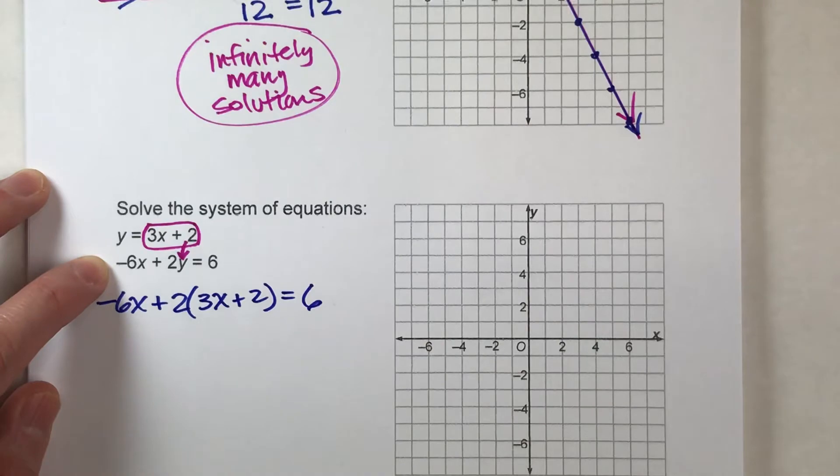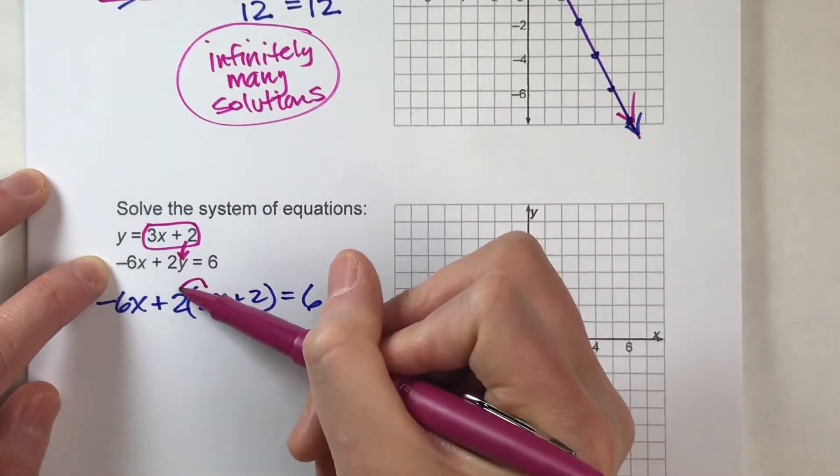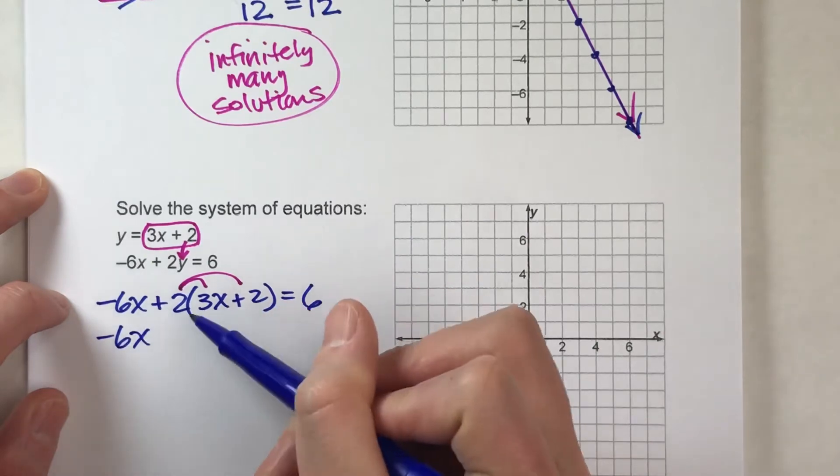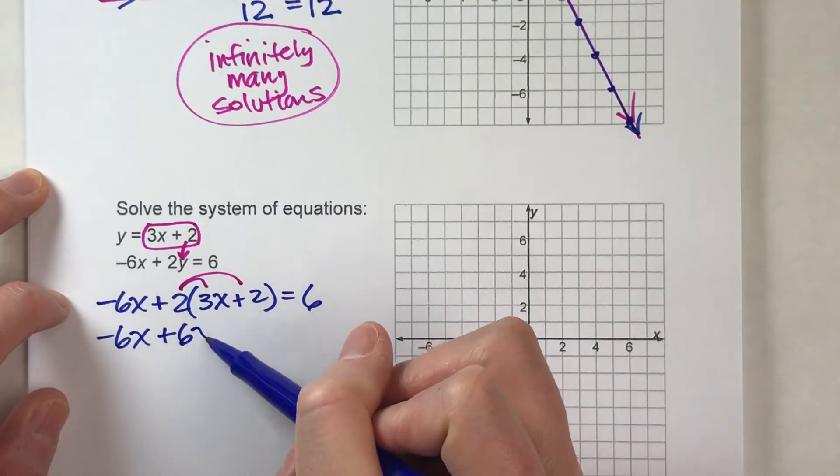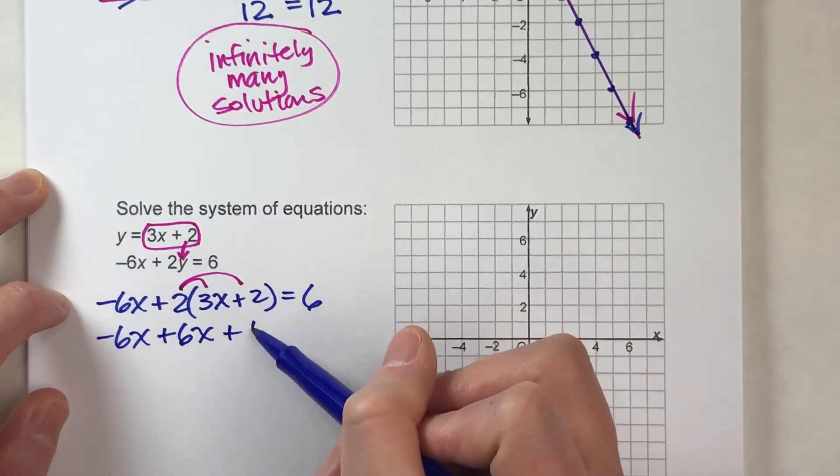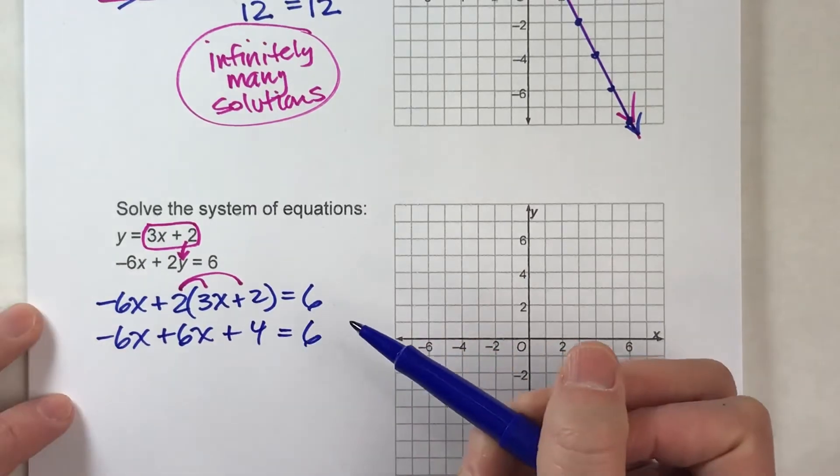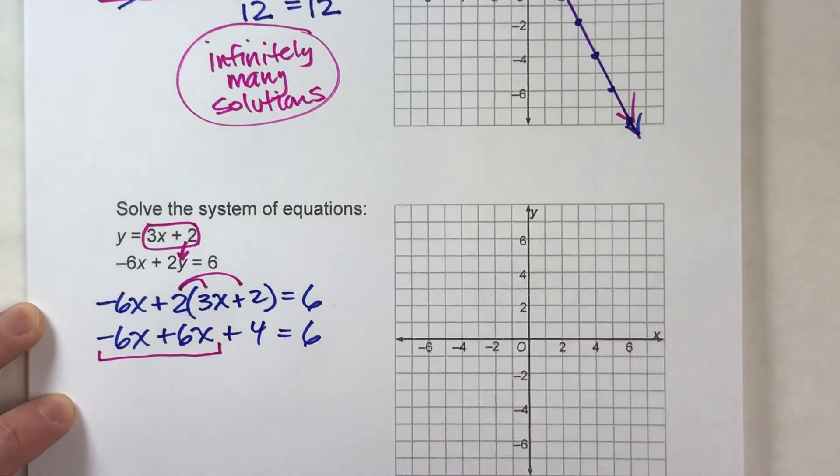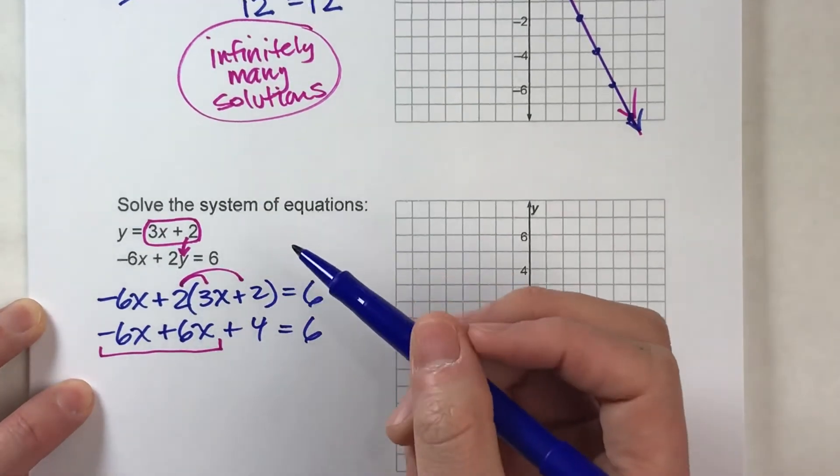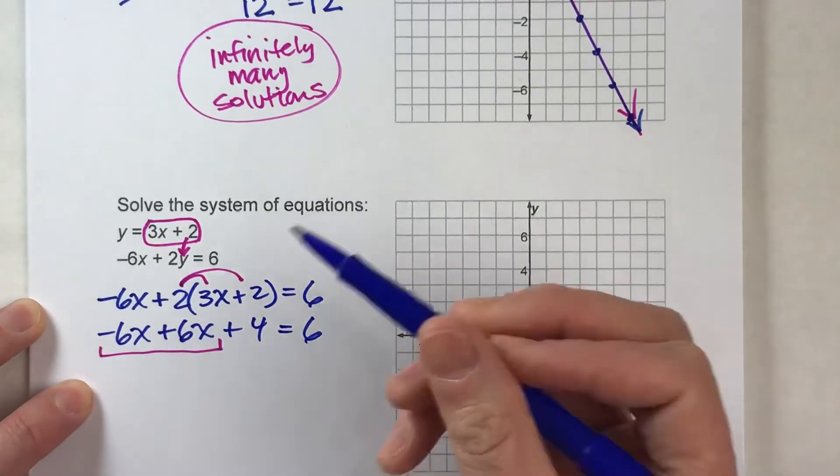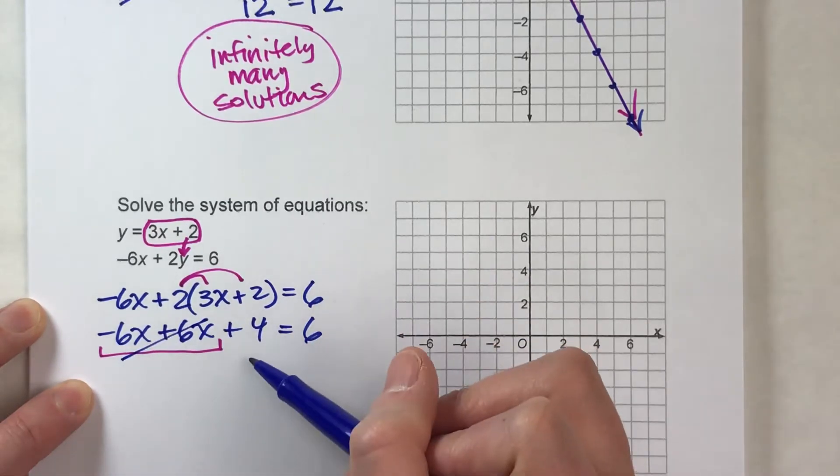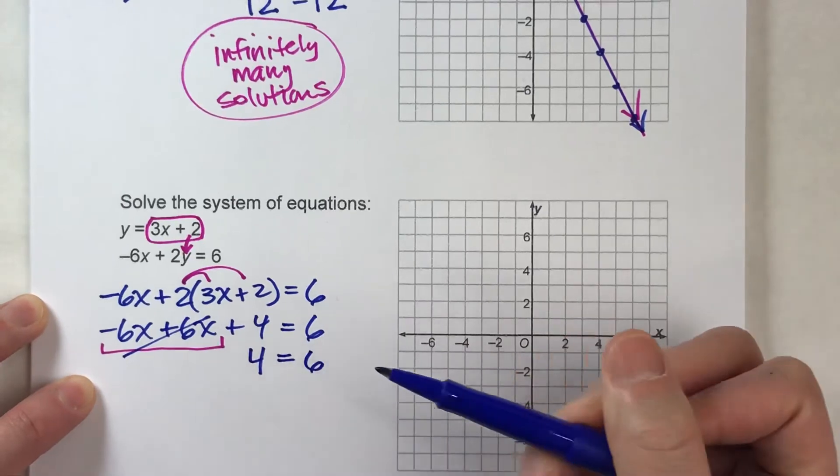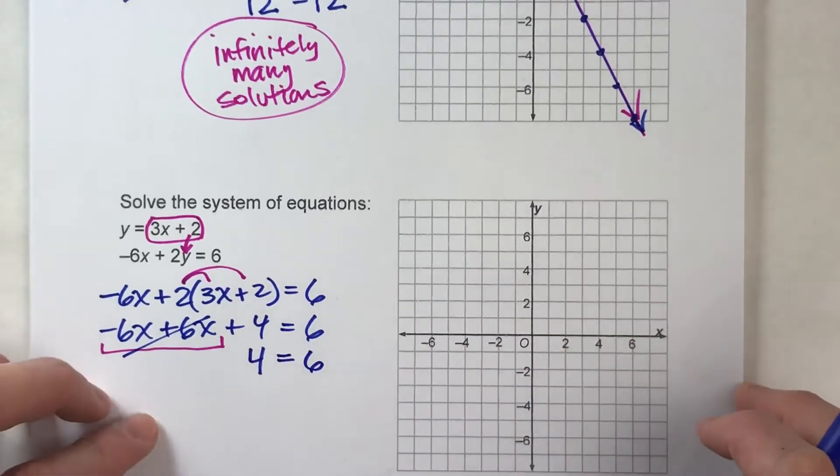So now let's do our distributive property here because we've got the parentheses. So 2 times 3x is 6x, and 2 times 2 is 4. Now we do have x's on the same side of the equals sign, so let's combine them together. -6x plus 6x is nothing, but all that's left on the left side is 4, and I'll drop down my equals and drop down my 6, and look what happens here.